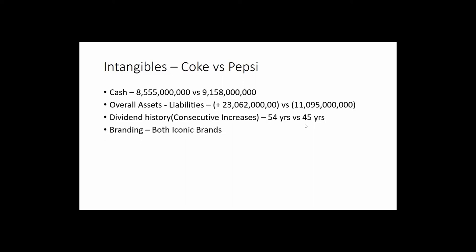The last intangible is branding. Iconic brands give a lot of weight to the product itself and to the actual company. You can go anywhere in the world and people know what Coke and Pepsi are — no question about it. Both are iconic brands, so it's pretty much even there.